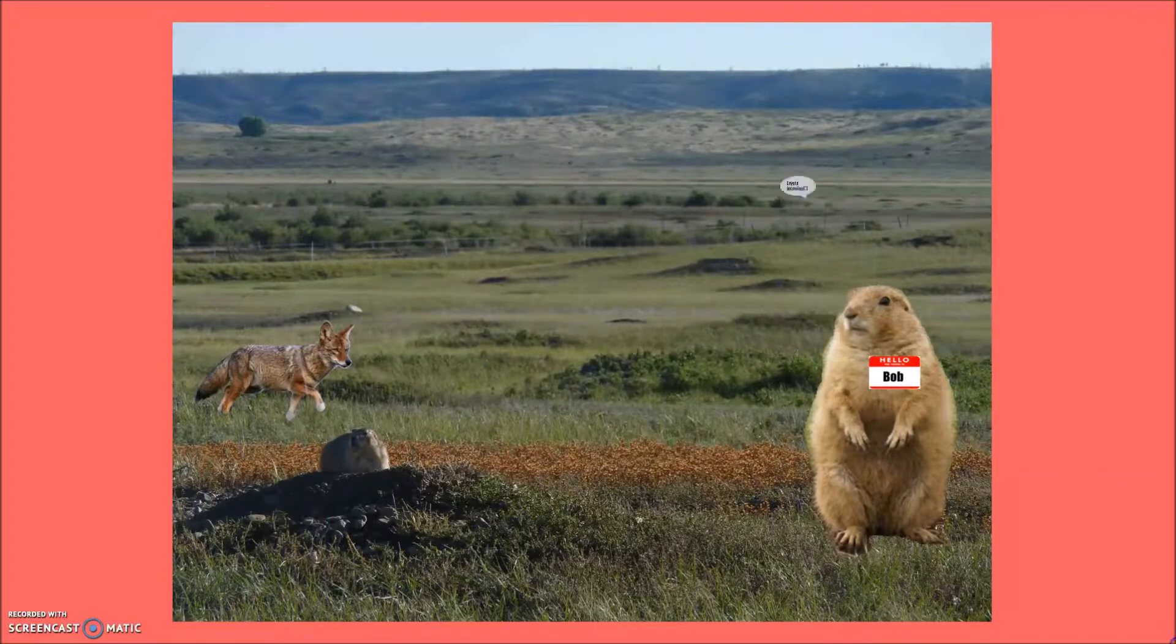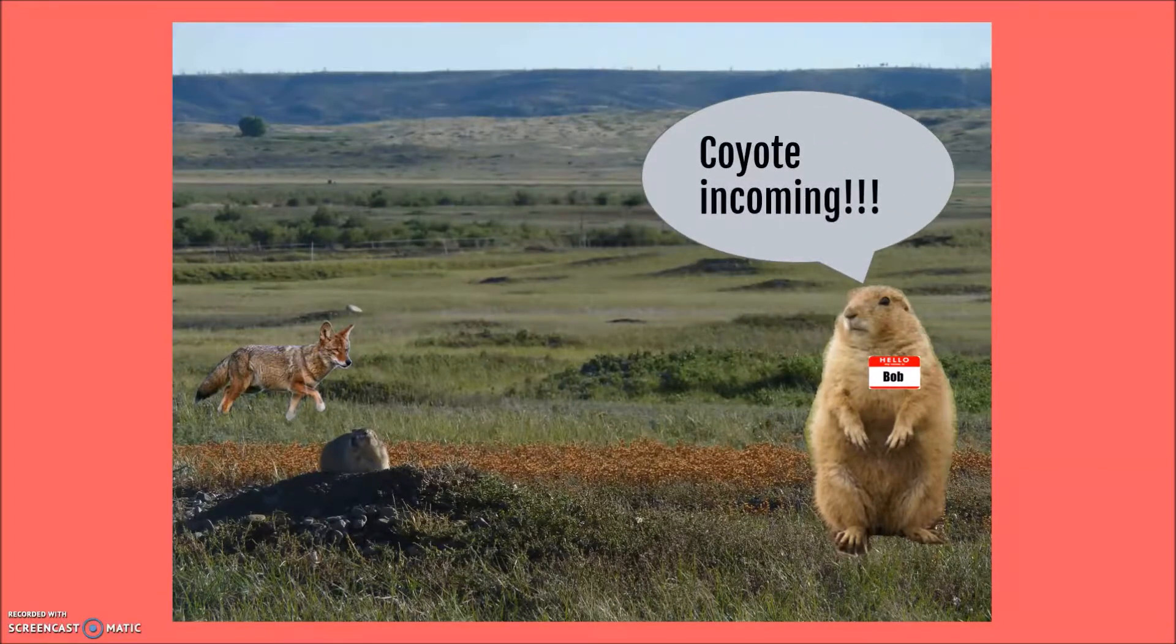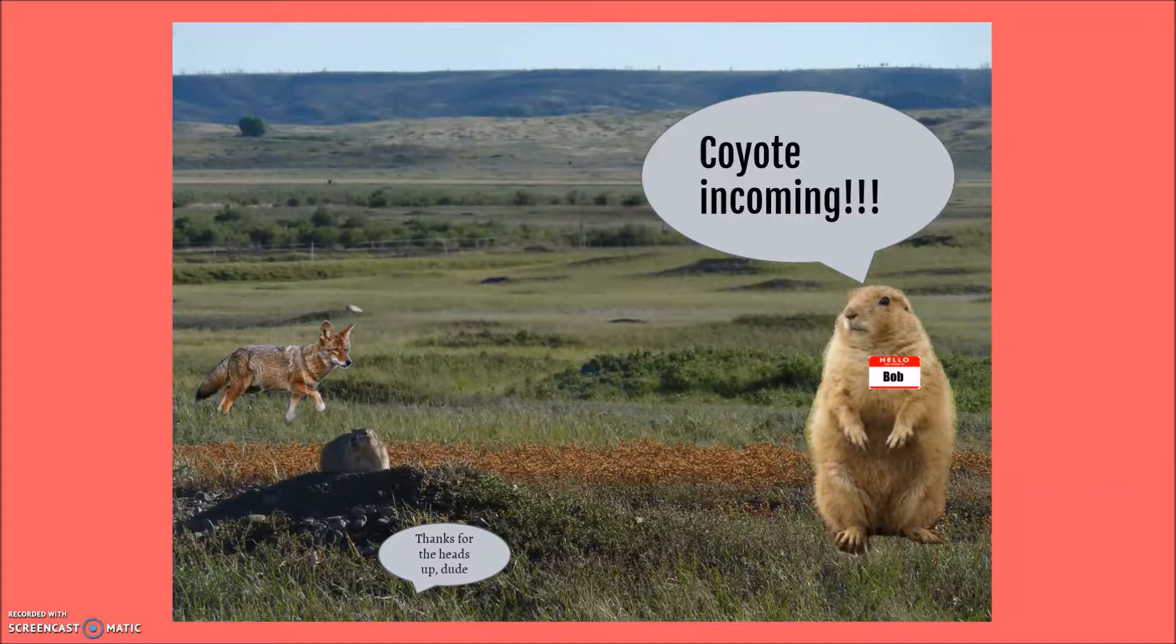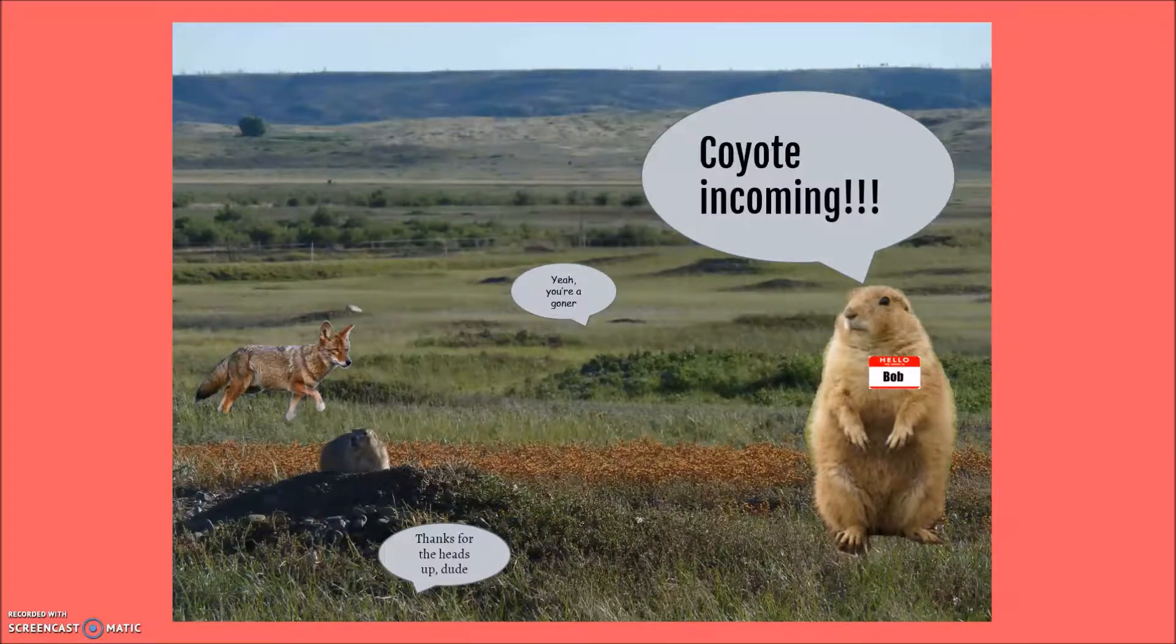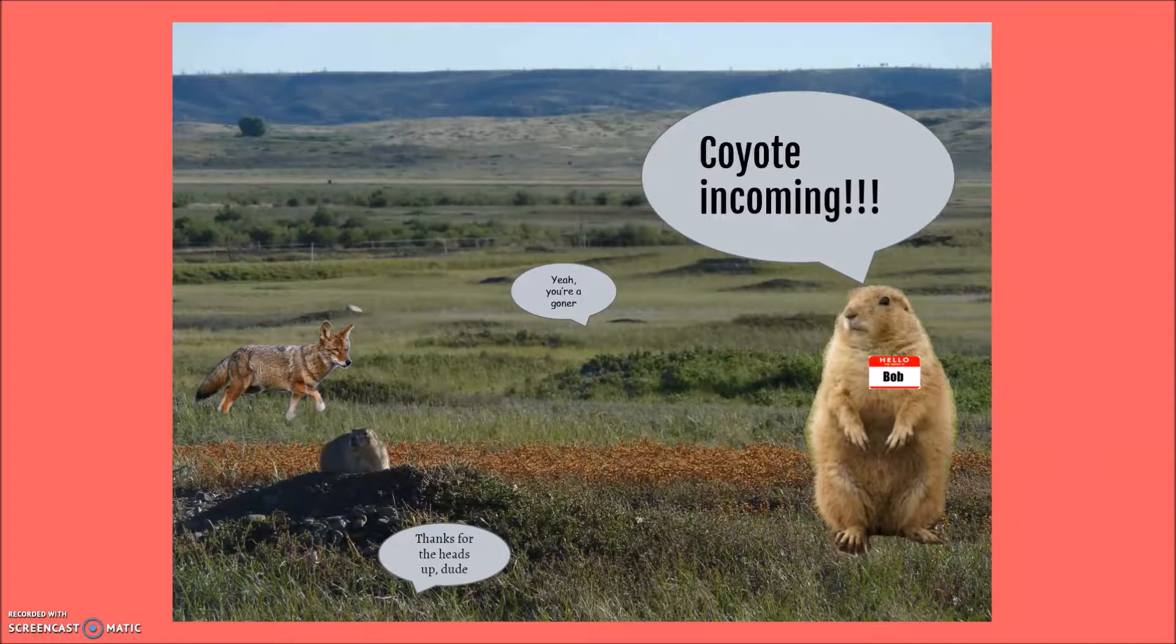He can either endanger himself by making a warning sound and save other prairie dogs, or try to escape and survive, obviously increasing his chances of reproducing. Say Bob warns the other prairie dogs. He'll die, but his sacrifice will save all the other prairie dogs around him who will have time to go and hide.